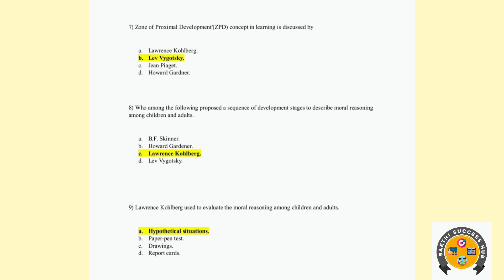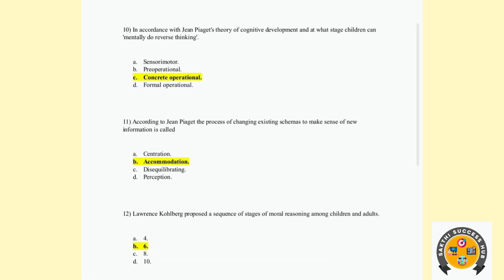Ninth question: Lawrence Kohlberg used what to evaluate moral reasoning among children and adults? Tenth question: Lawrence Kohlberg proposed a sequence of stages of moral reasoning among children and adults — this is the conventional level, stage 6. So the answer is 6.